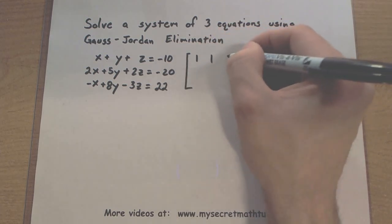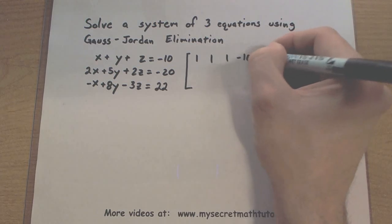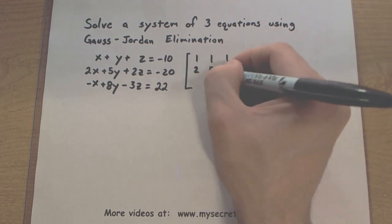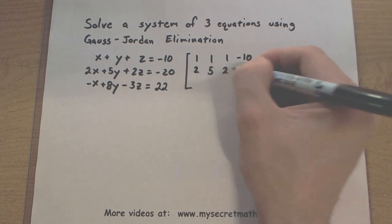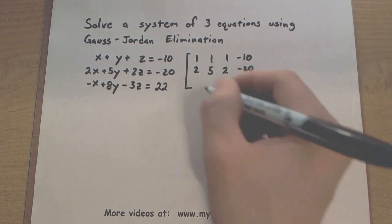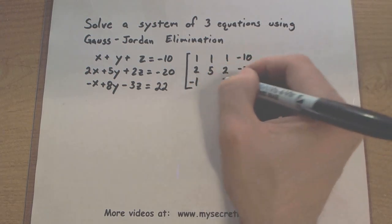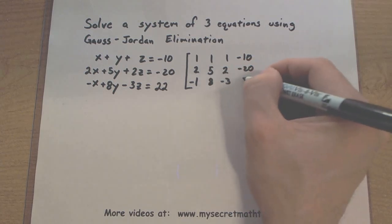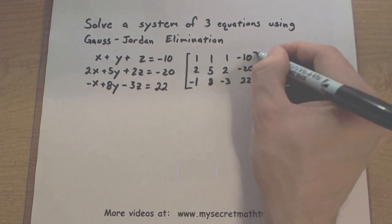So I've got 1x, 1y, 1z equals negative 10, 2x, 5y, 2z equals negative 20, negative 1x, 8y, negative 3z equals 22.